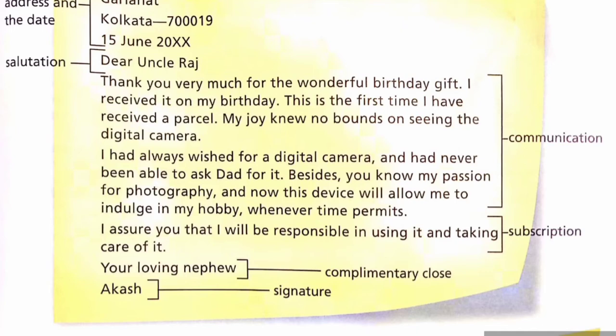The next part is the subscription. 'I assure you that I will be responsible in using it and taking care of it.' Next is the complimentary close. Since the relation is of nephew, it is written 'Your Loving Nephew.' After that comes the signature, where the writer writes their name. Here it is written 'Agash.'